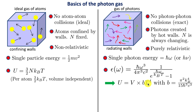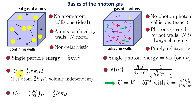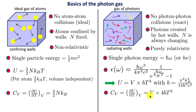For both the ideal gas and the photon gas we can look at specific heats. The specific heat at constant volume, C_V, is defined as dU/dT at constant V. For the ideal gas, C_V equals 3/2 N k_B. For the photon gas, C_V is directly proportional to the volume — differentiating V times b T to the 4 with respect to T gives 4bVT-cubed. The bigger the volume, the greater the specific heat, because more volume means more photons.